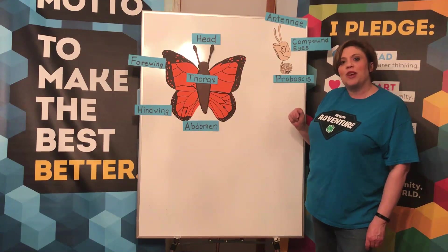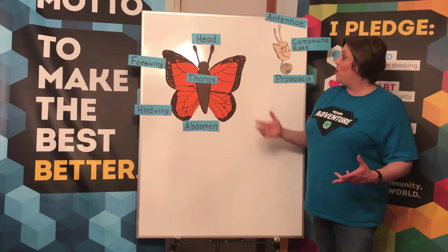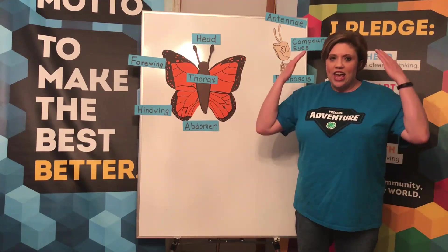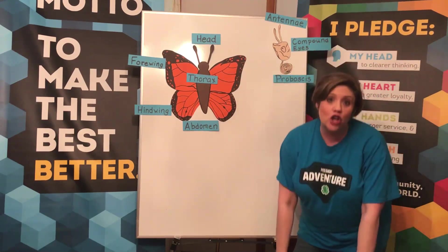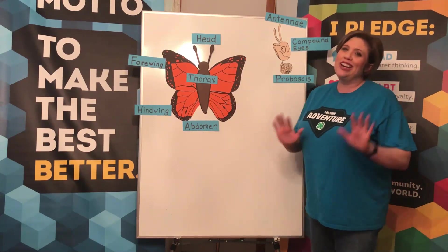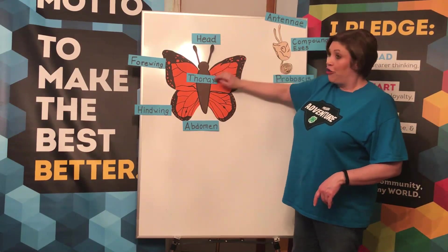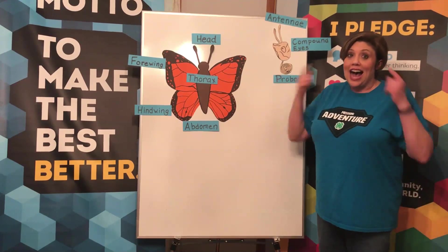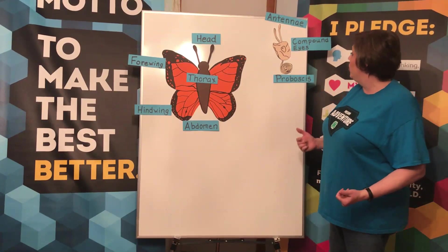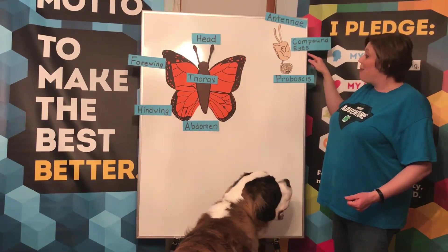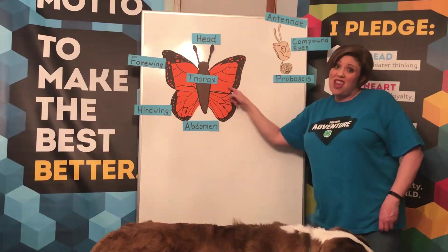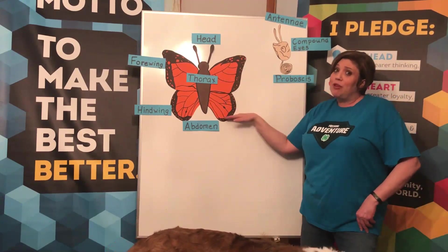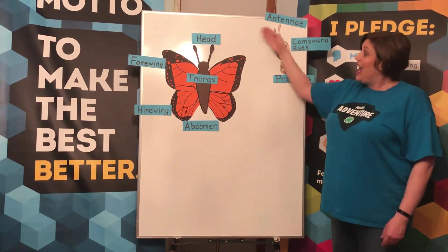There is a little song that we can learn that will help us remember the different parts. If you remember when you were growing up, you probably heard the 'Head, Shoulders, Knees and Toes' song. Well, we can do that with our butterfly parts. We're going to do head, thorax, abdomen instead of head, shoulders, knees and toes. And we're going to put in antenna, compound eyes, and proboscis instead of eyes and ears and mouth and nose. Let's try it: Head, thorax, abdomen, abdomen. Head, thorax, abdomen, abdomen. Antenna, compound eyes and proboscis. Head, thorax, abdomen.